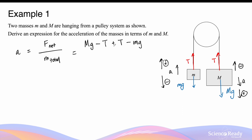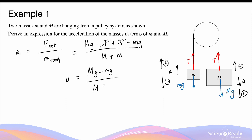This is the total net force acting on both masses considered as one single mass, divided by the total mass, capital M plus smaller m. In the numerator, the two tensions cancel each other out because they are equal in magnitude. This gives us capital Mg minus smaller mg divided by capital M plus smaller m, and we can factorize out gravity to give the acceleration equation: (M − m) / (M + m) × g.